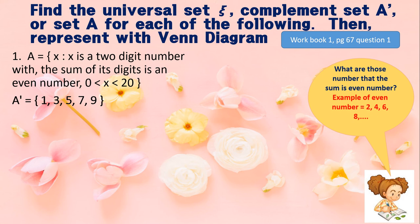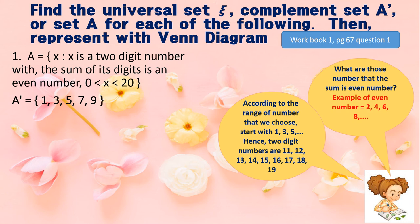First, we think about which numbers have an even digit sum. Even numbers are like 2, 4, 6, 8. Now we identify which two-digit numbers, when their digits are totalled, give an even number. Based on the range, we start from 11, 12, 13, 14, 15, 16, 17, 18, and 19. 20 is not included because the symbol given is less than 20. Can you tell me what elements are involved?